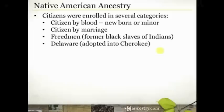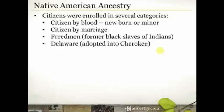Citizens were enrolled in several different categories. They could be a citizen by blood, meaning they were born into a family where the parents were already citizens. They could be citizens by marriage — this dispels a myth that if an Indian married a white, they were excluded from the tribe. In fact, it was often the other way around: if a white married an Indian, they were included in the tribe, and their children became citizens by blood. There were also freedmen — former black slaves of Indians who were granted tribal enrollment — and a small section of Delaware Indians adopted into the Cherokee tribe.